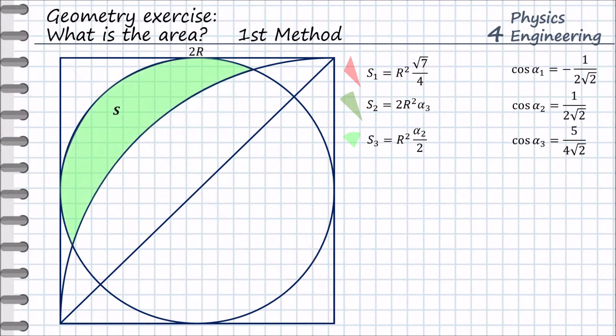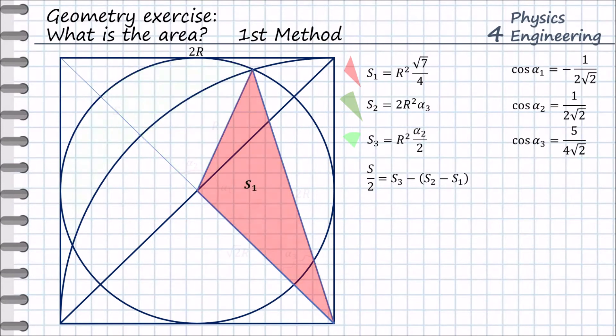Now with these three pieces of the puzzle we can find the s area. The half of s is equal to s3 area. We need to take s2 minus s1 and subtract it from s3, and then we have our s area.